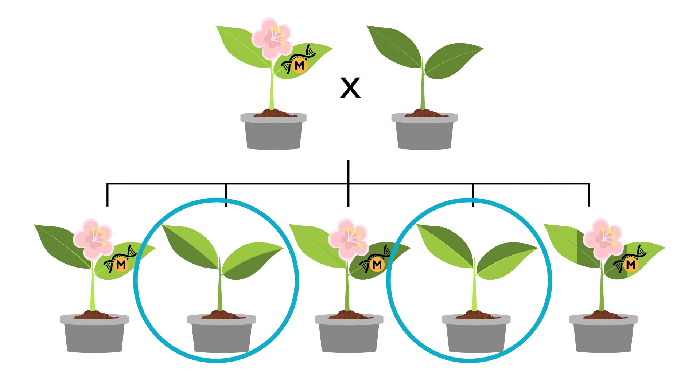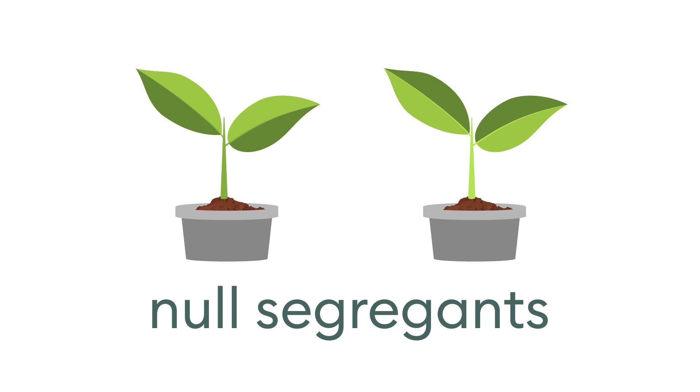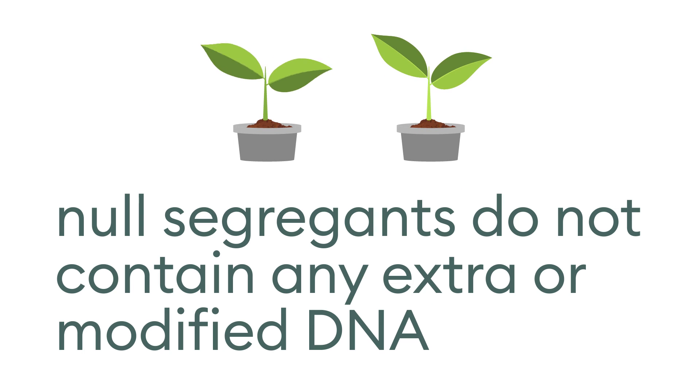These offspring are called null segregants because they do not contain the modified gene. Null segregants do not contain any extra or modified DNA, just a mixture of non-modified genes from both parents.